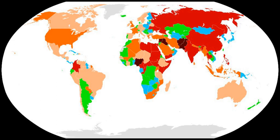The Global Terrorism Index is a report published annually by the Institute for Economics and Peace, and was developed by IT entrepreneur and IEP's founder Steve Killey. The index provides a comprehensive summary of the key global trends and patterns in terrorism since 2000. It produces a composite score in order to provide an ordinal ranking of countries on the impact of terrorism.